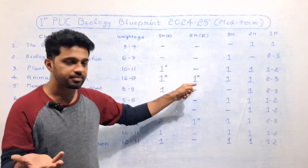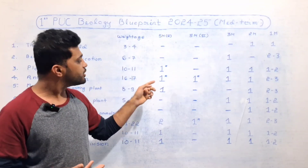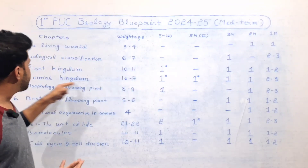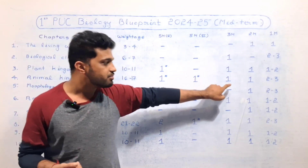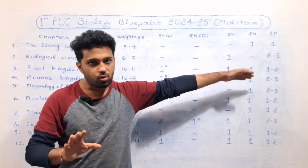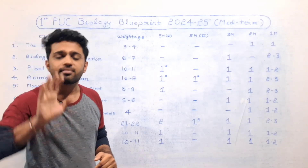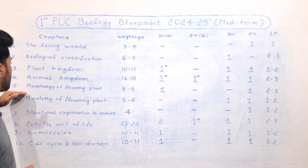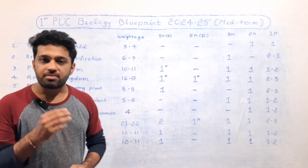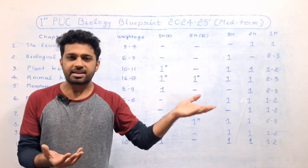The Animal Kingdom chapter has 5-mark questions, 3-mark questions, and 2-mark questions. Next chapter: Morphology of Flowering Plant — it is 8 to 9 marks. Compare to final exam, this chapter has long answer related questions.